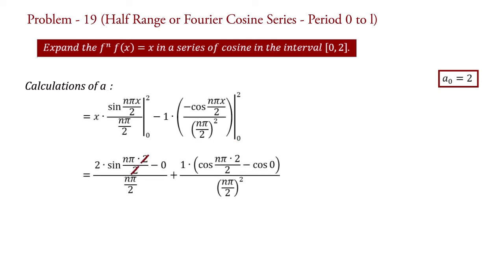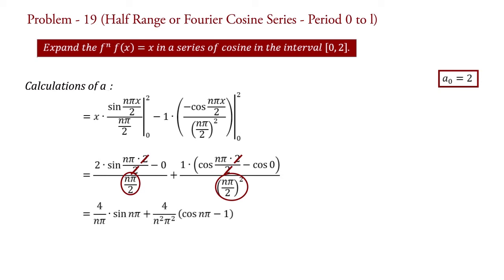After the 2s cancel and transferring the denominator terms to the numerator, we get: an = (4/nπ)·sin(nπ) + (4/n²π²)·(cos(nπ) − 1).